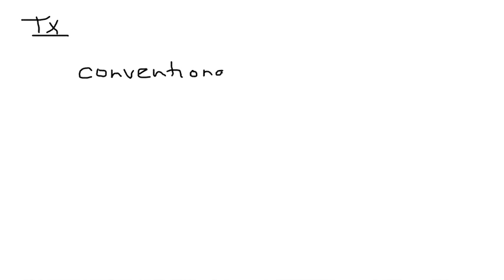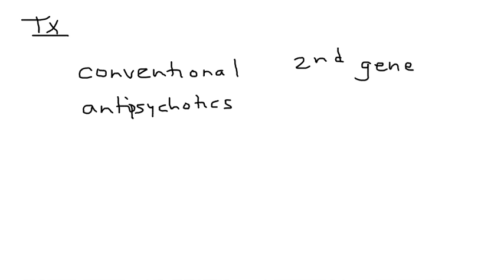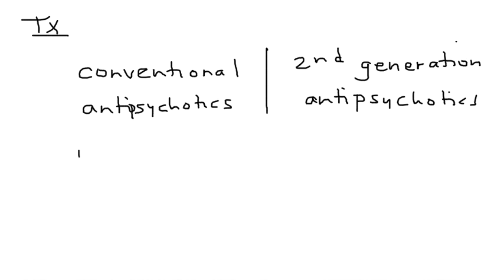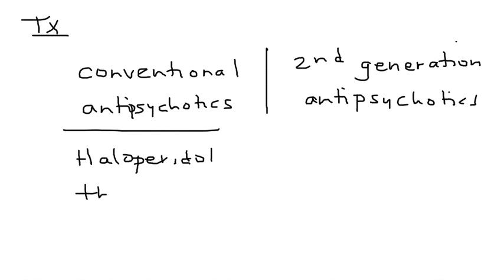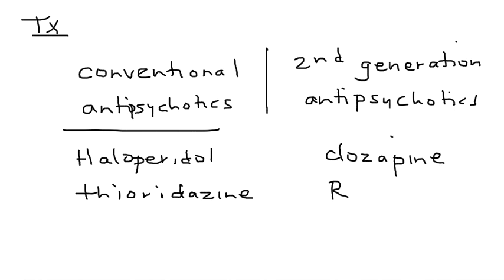Treatment of schizophrenia is very commonly tested on licensing exams. You have two categories of medications: conventional antipsychotics and second-generation antipsychotics. Examples of conventional include the very famous haloperidol and thioridazine. For second generation, you have clozapine and risperidone.